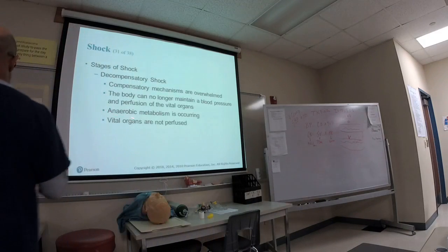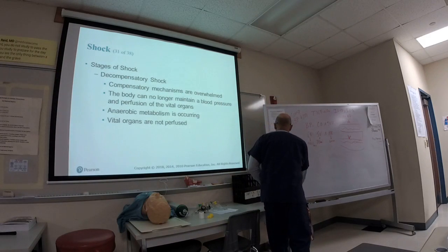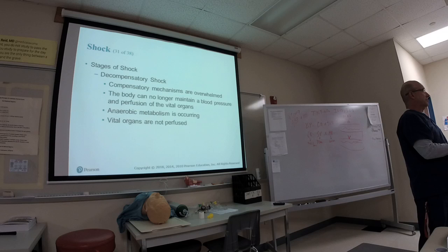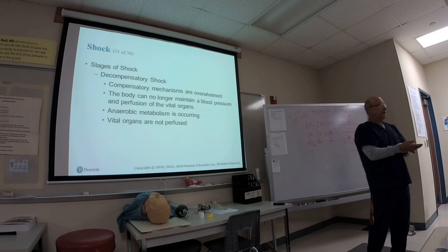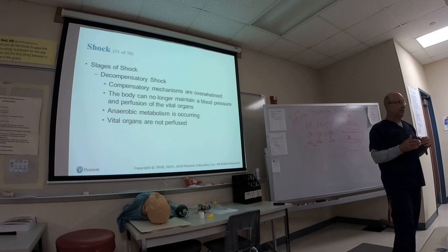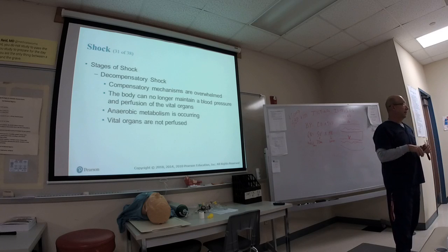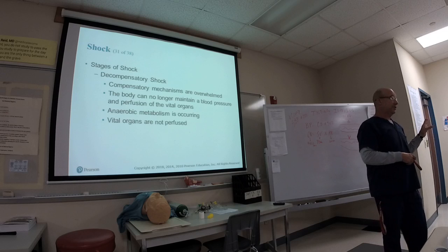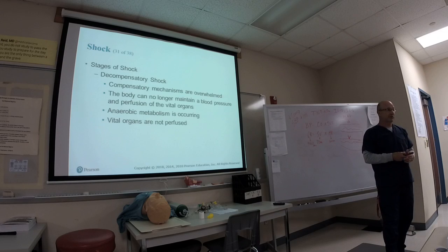In decompensated shock, we're in anaerobic metabolism and vital organs are not being perfused correctly. A useful clinical tool: if you check for a radial pulse and it's absent, that estimates a systolic blood pressure below 80. That's important because a blood pressure below 80 means the kidneys are not working — it takes about 80 mmHg to perfuse the kidneys.